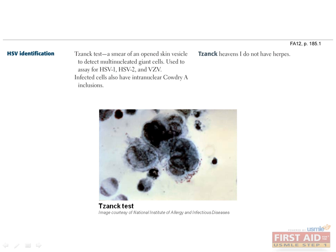The Tzanck smear identifies HSV-1, HSV-2, and VZV by looking for multinucleated giant cells found in these infections. Skin biopsy can also be performed, with the presence of intranuclear inclusion bodies being pathognomonic for HSV or VZV infection.